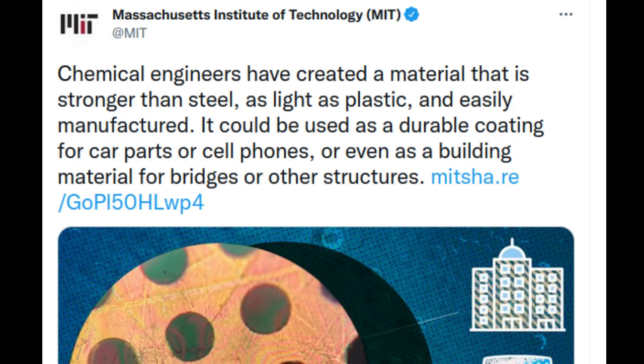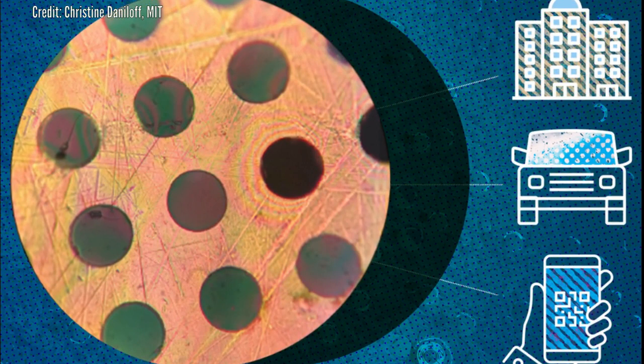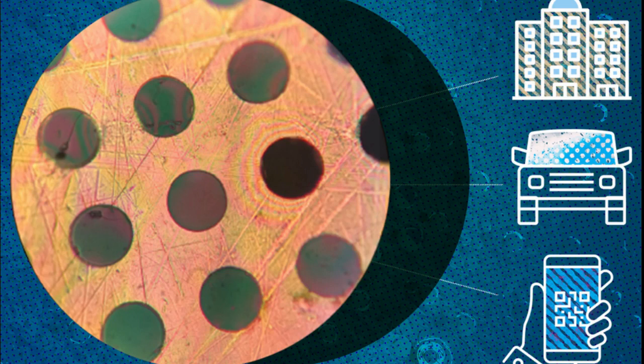The new material is a two-dimensional polymer that self-assembles into sheets, unlike all other polymers which form one-dimensional spaghetti-like chains. Until now, scientists had believed it was impossible to induce polymers to form 2D sheets.